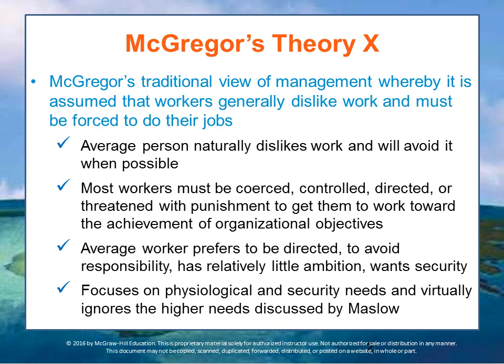Theory X managers believe the following: the average person naturally dislikes work and will avoid it when possible. Most workers must be coerced, controlled, directed, or threatened with punishment to work toward the organization's objectives. The average worker prefers to be directed and avoids responsibility, has relatively little ambition, and really just wants their paycheck and job security. Theory X focuses on the physiological and security needs Maslow described — the hygiene needs — and virtually ignores higher-level needs.